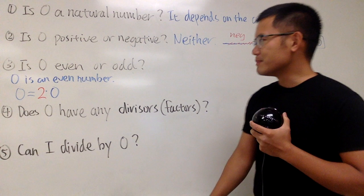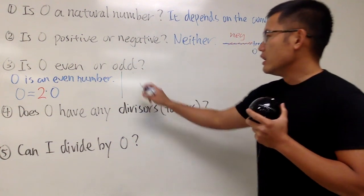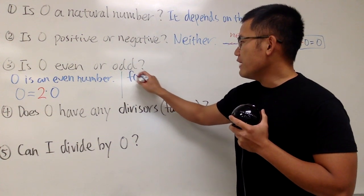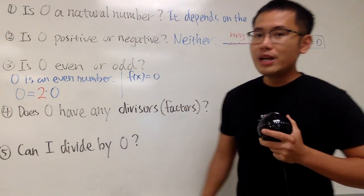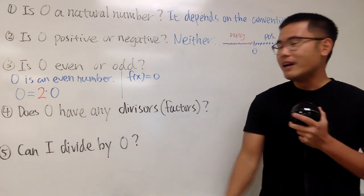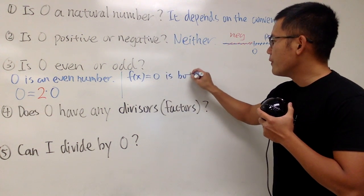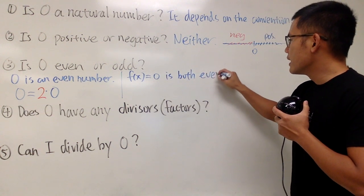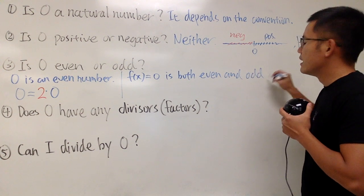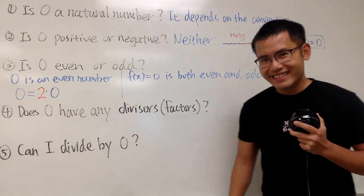But why did I say it's both? Now, check this out. If you are talking about the function, let's say f is equal to 0, and we are talking about the constant function 0, in that case I can say 0 is both even and odd as a function, right?